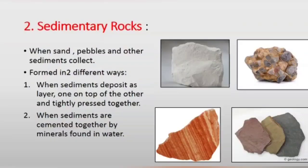The second type of rocks is sedimentary rocks. Sediments means layers. Because of wind and rain, rocks break into small pieces and along with wind and rain they flow to lakes, rivers, and seas, where they sink to the bottom and form layers one upon another called sediments. When sand, pebbles, and other sediments collect, they form sedimentary rocks. There are two different ways of forming sedimentary rocks: first, when sediments of sand and pebbles deposit as layers one on top of the other and are tightly pressed together; and second, when sediments are cemented together by minerals found in water.